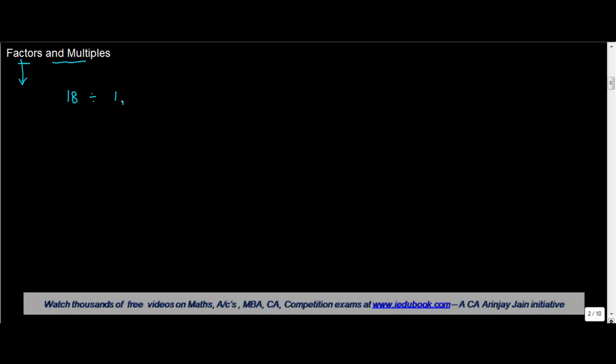In this video we will understand about factors and multiples. Let's first see what you mean by factor. Now let us take any number — let's say we take 18. Now if you see, 18 can be divided by 1. If you divide 18 by 1 you will get 18. Then 18 can also be divided by 2, because if you divide 18 by 2 you will get 9. Similarly, 18 can be divided by 3.